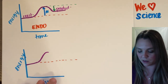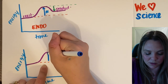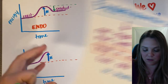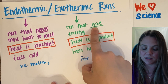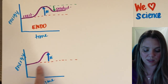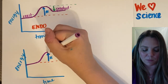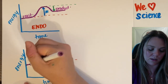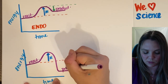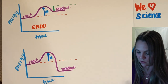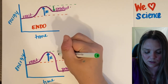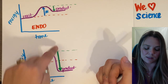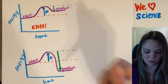The opposite is true for an exothermic reaction. You still have to overtake the activation energy, but in an exothermic reaction it gives back more energy than it needed to overcome the activation energy. So the line goes below that dotted line — reactants are higher, products are lower. It gives back more than it took, so this is exothermic.